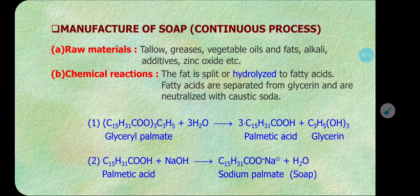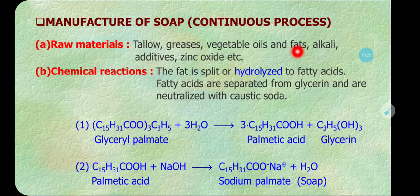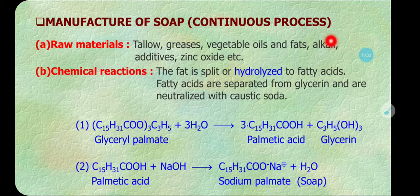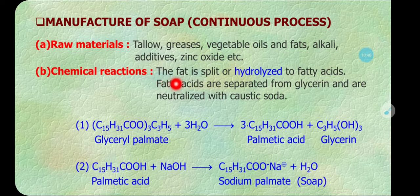Now let us see how soap is manufactured in a continuous process. The main raw materials are fats — tallows, grease, and vegetable oils — and the second important chemical is alkali for hydrolysis. Zinc oxide is used as a whitening agent and as a catalyst, and dyes and perfumes can also be used.